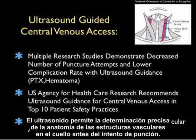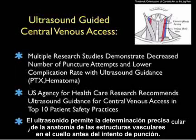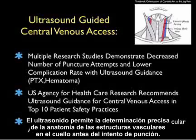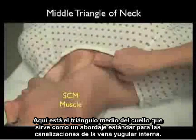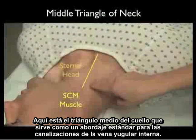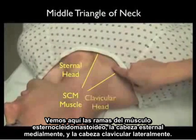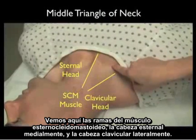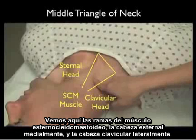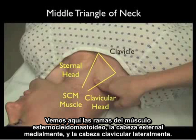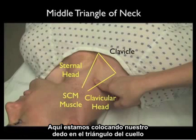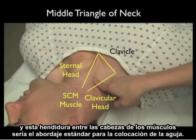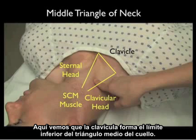Ultrasound will allow precise determination of the anatomy of the vascular structures in the neck prior to a puncture attempt. Here's the middle triangle of the neck that serves as the standard approach for cannulation of the internal jugular vein. We see here the branches of the sternomastoid muscle — the sternal head medially and the clavicular head laterally. Here we're putting our finger into the triangle of the neck, and this indentation between the muscle heads would be the standard approach for placement of the needle.